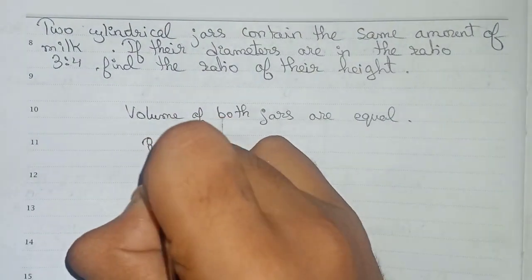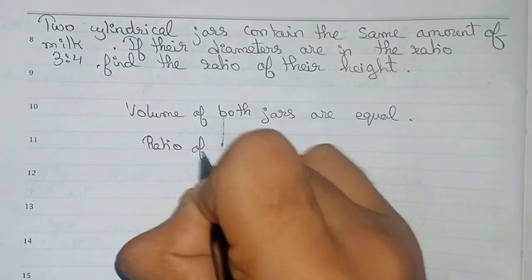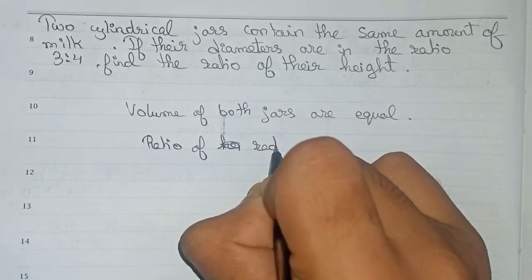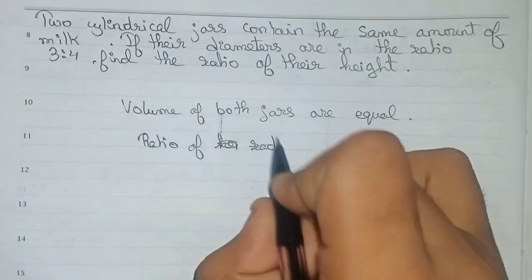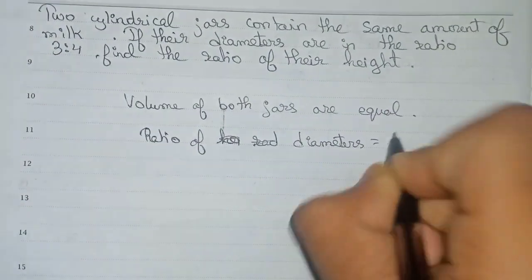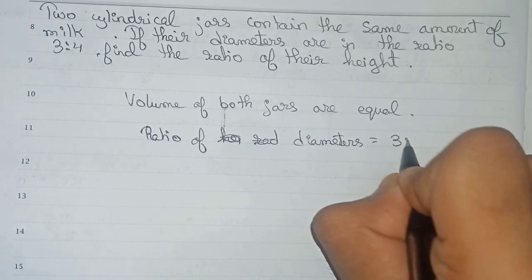Now it is given that the ratio of diameter, not radius, so ratio of diameters is given 3 is to 4.